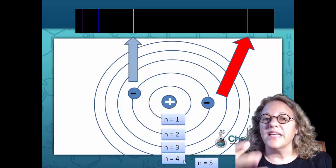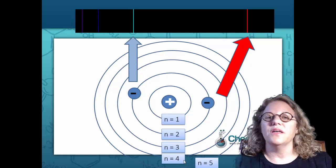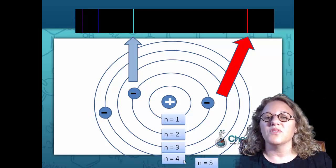So electrons gain energy, move to higher energy level, lose energy, and give off that energy in the form of light, either visible or other forms of light.